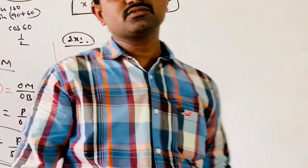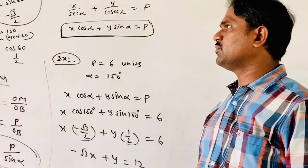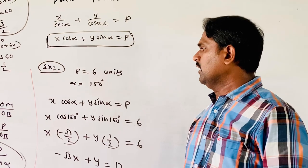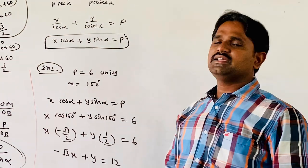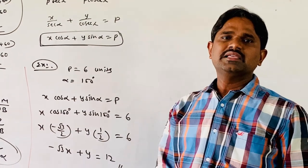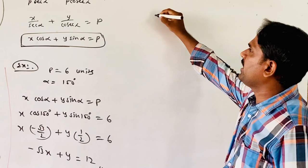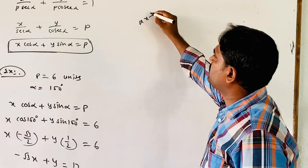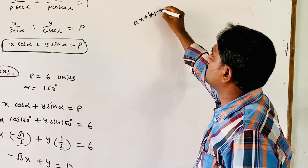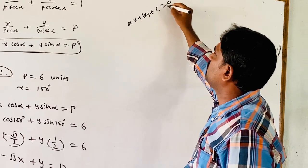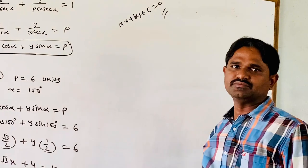In the next class, we are going to discuss the perpendicular form of a straight line in standard form: Ax plus By plus C equals 0. Thank you.